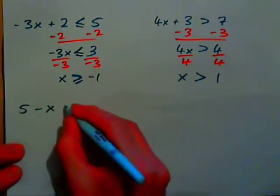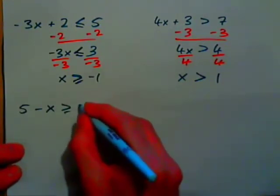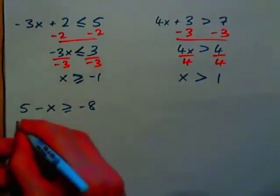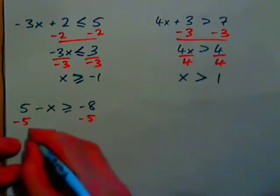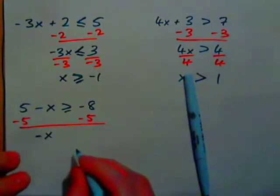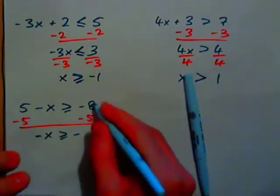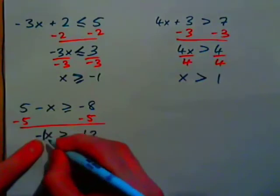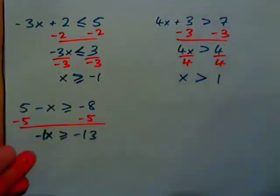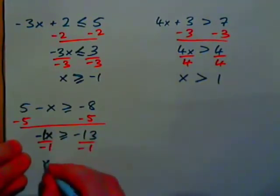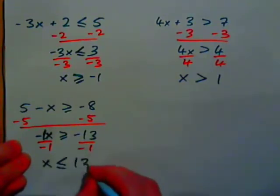How about 5 minus x is greater than or equal to negative 8? Subtract 5 from both sides: negative x is greater than or equal to negative 13. Negative x means the coefficient is negative 1, so divide both sides by negative 1. Since we divided by a negative, we change direction: x is less than or equal to 13.